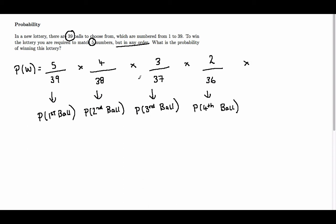And finally, matching up the fifth and final ball, we've only got one ball left, and there are 35 balls in the pot. So that's the probability of getting the fifth ball.